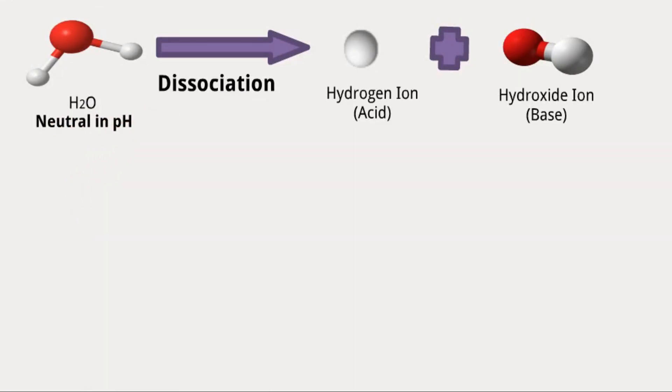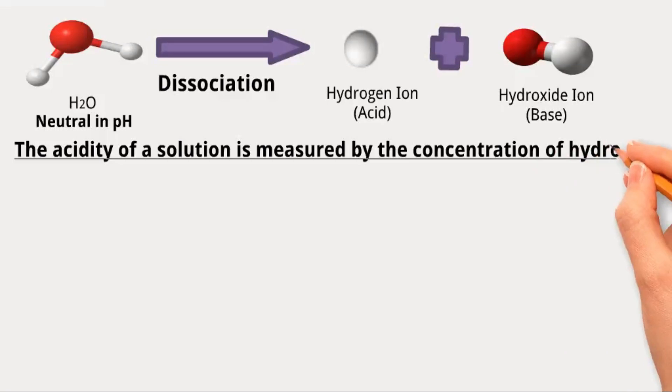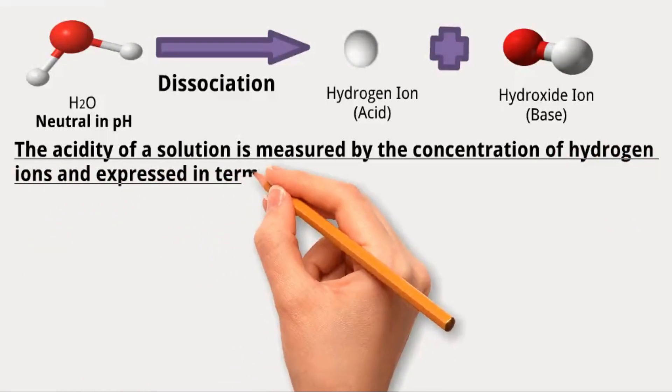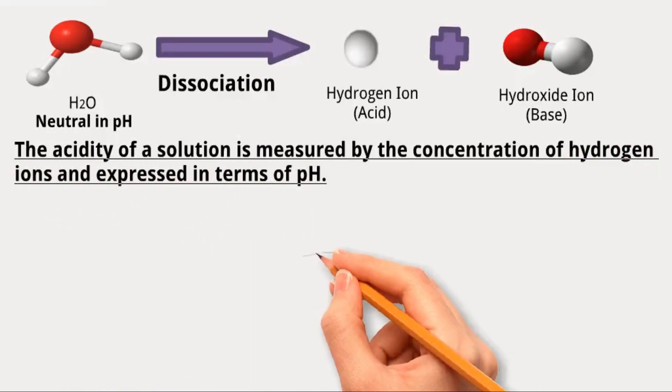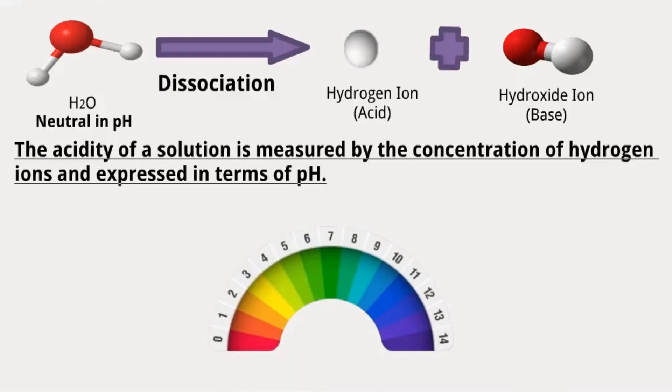So, generally speaking, the pH scale is the measurement of how a particular solution is sour or bitter. To speak more scientifically, the acidity of a solution is measured by the concentration of hydrogen ions and expressed in terms of pH. The pH scale ranges from 0 to 14, where a pH less than 7 indicates an acidic solution.